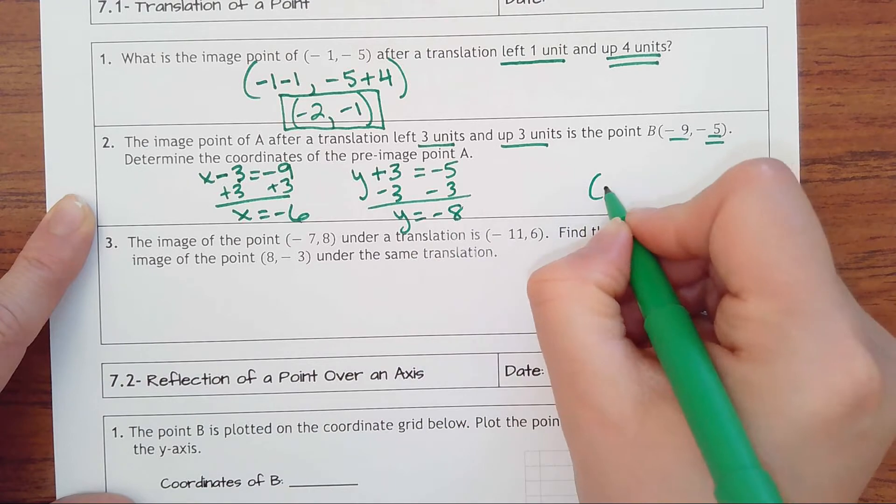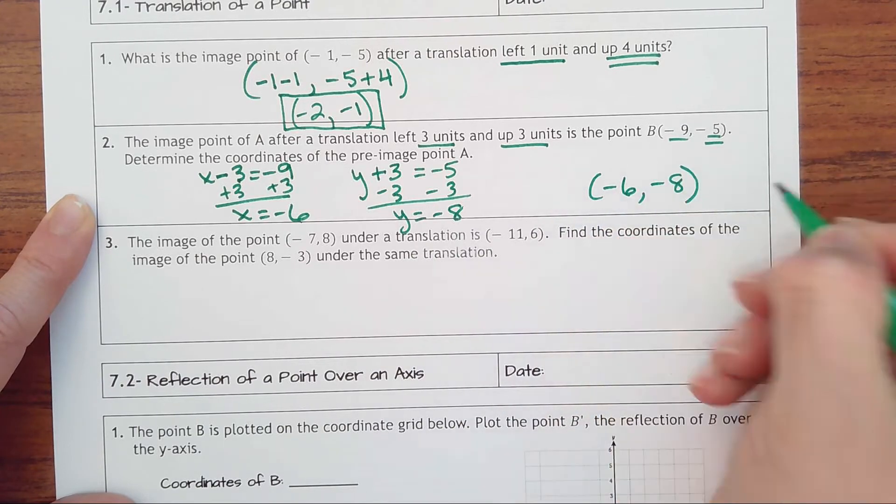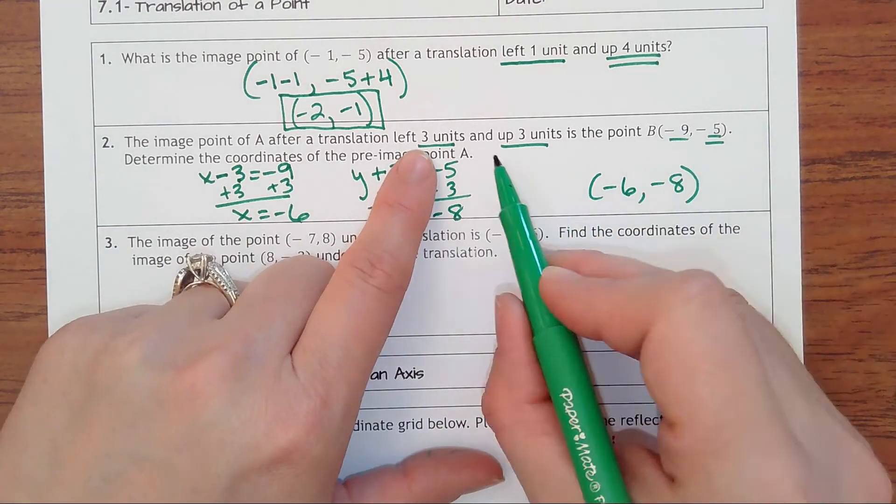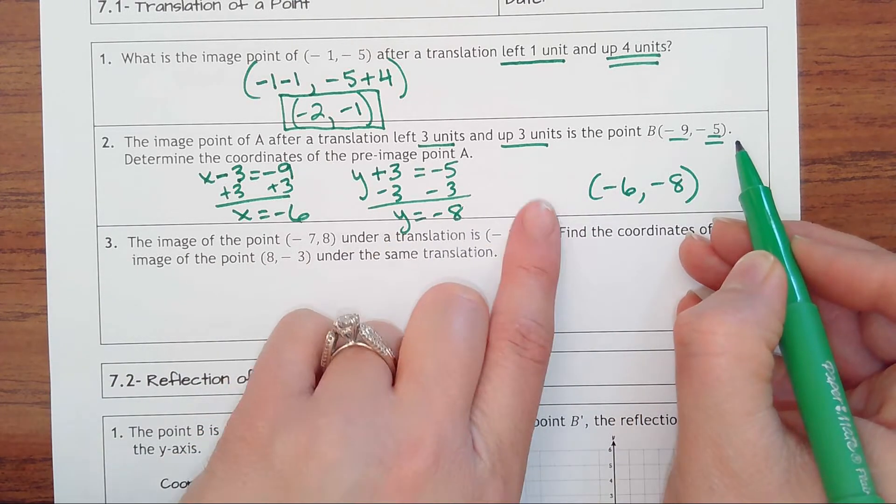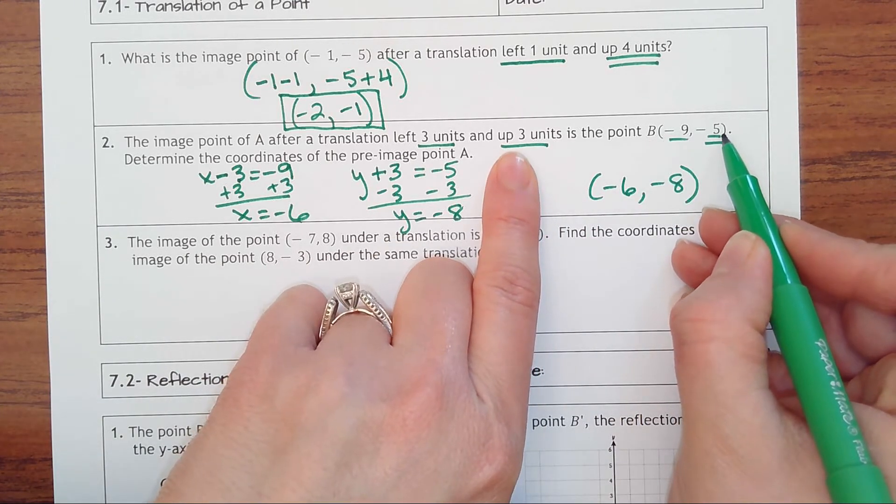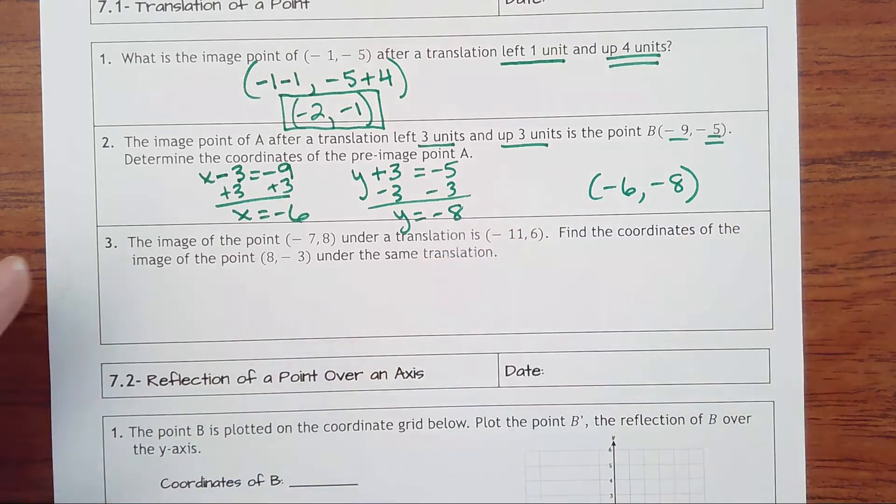Or you just think you're doing the opposite. So if this went left three, we need to add three to this. If something was up three, we need to subtract three from this. So it's just the inverse or the opposite.